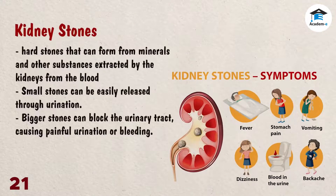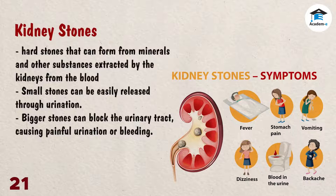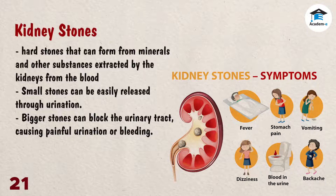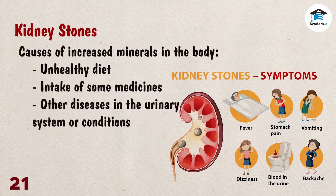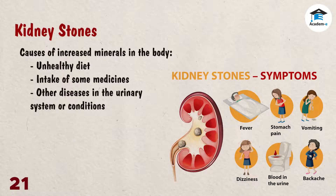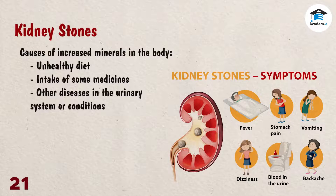Kidney stones are hard stones that can form from minerals and other substances extracted by the kidneys from the blood. If they are small, the kidney can easily release them through urination. Problems occur when the stone gets bigger, which can block the urinary tract, causing painful urination or bleeding. An unhealthy diet, intake of some medicines, and other diseases in the urinary system or conditions that cause increased minerals in the body may lead to kidney stone formation.